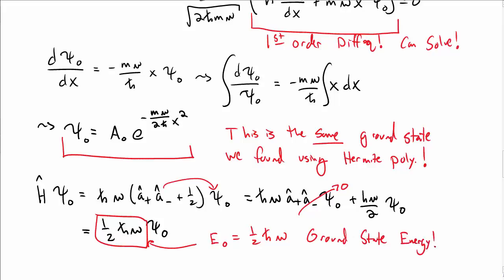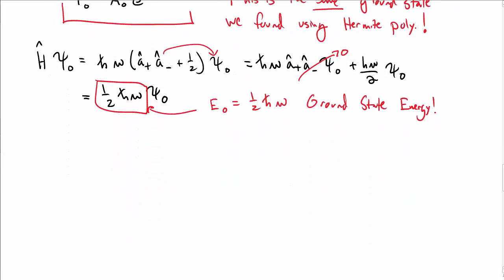Again, that's something that we found using Hermite polynomials, that that's the ground state energy of the quantum harmonic oscillator.